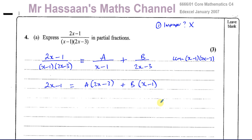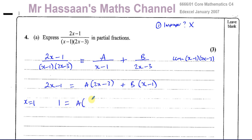Now we can find the values of A and B. The easiest way is to find a value of x which causes one bracket to become 0. If I put x equals 1, the (x minus 1) bracket becomes 0, eliminating B. Substituting x equals 1: 2(1) minus 1 equals 1, equals A times (2(1) minus 3) equals A times (minus 1), so A equals negative 1.